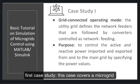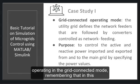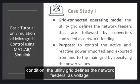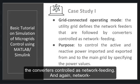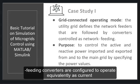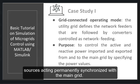This case covers a microgrid operating in the grid-connected mode. In this condition, the utility defines the network feeders as voltage amplitude, frequency and phase, that are all followed by the converters controlled as network feeding. Network feeding converters are configured to operate equivalent as current source, acting permanently synchronized with the main grid.